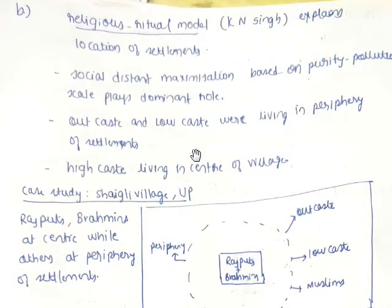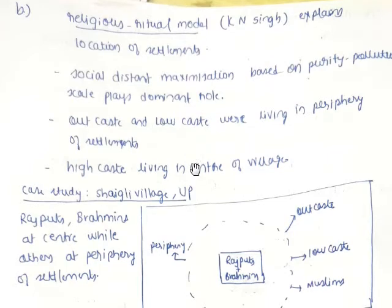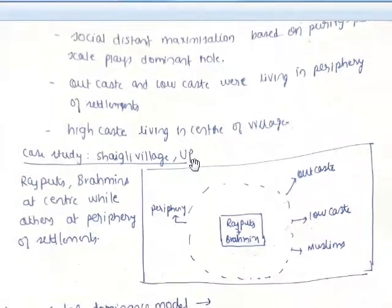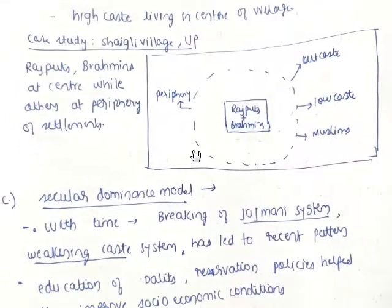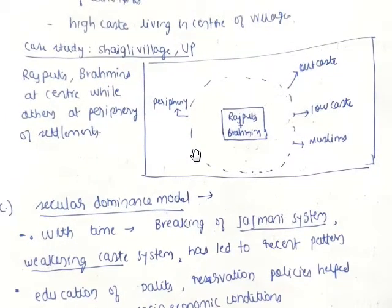K.N. Singh explains the location of settlements based on social distance maximization, rooted in purity and pollution values. The purity-pollution scale plays a dominant role — outcastes and low castes were living on the periphery of settlements, while high castes lived in the center of the village.